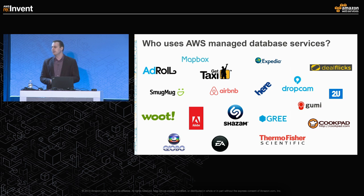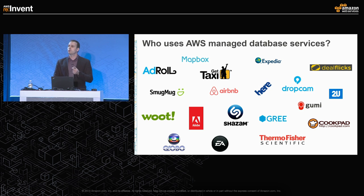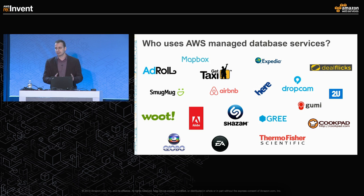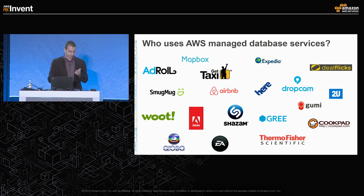This slide shows a small subset of the many thousands of customers using our managed services. The purpose is to show there is really no one type of customer — whether large companies or startups, certain verticals or certain use cases — that can benefit from offloading the management layer to AWS. It's really something across the board regardless of your business or the size of your company, from small successful startups all the way to big enterprises like Adobe, TVG, and Electronic Arts.